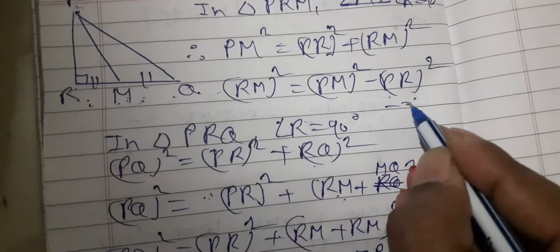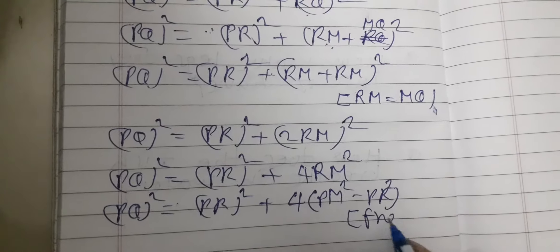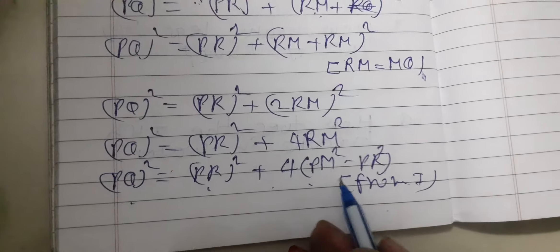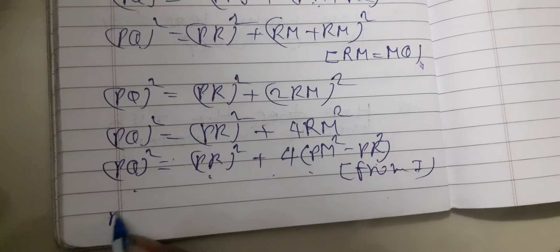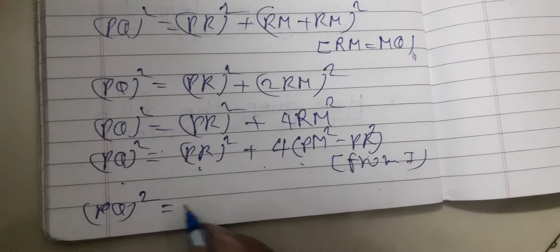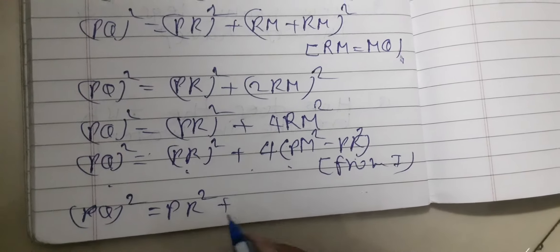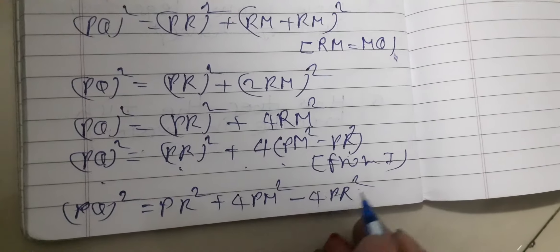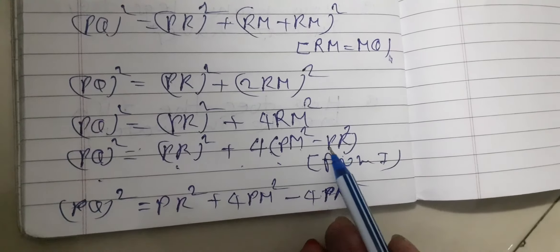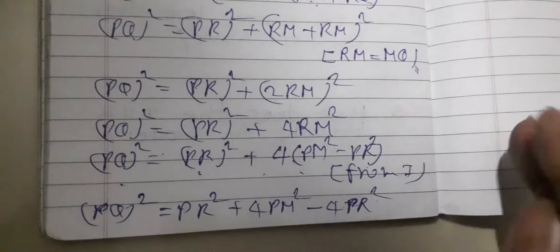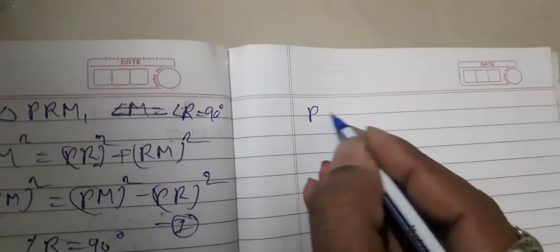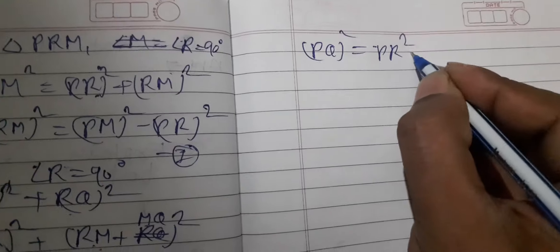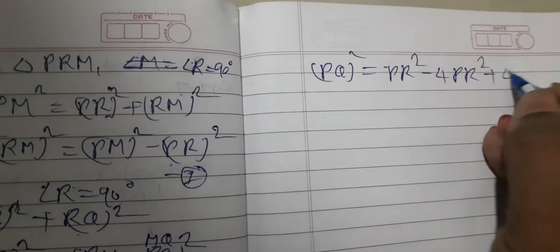Here we have proved it — this is equation 1. Now substituting RM square equals PM square minus PR square from equation 1: PQ square is equal to PR square plus 4 times PM square minus PR square.